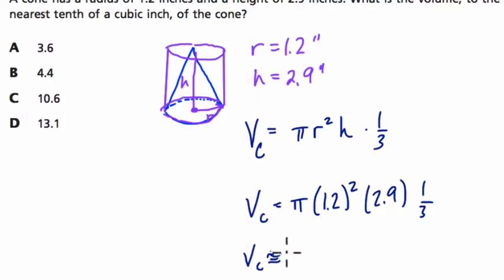So it's about 4.373. They want it to the nearest tenth, so it's 4.4, choice B. Alright, I hope this helped.